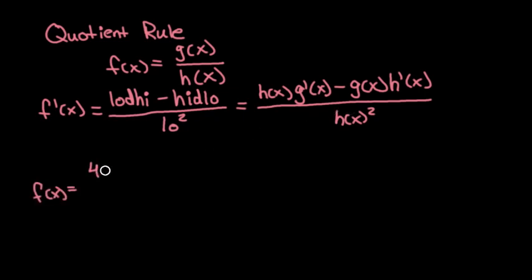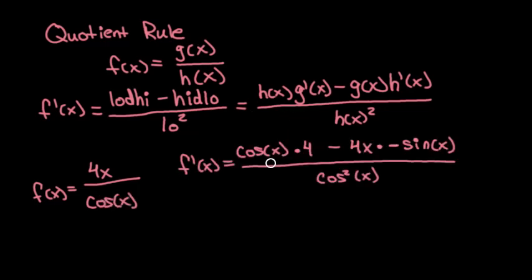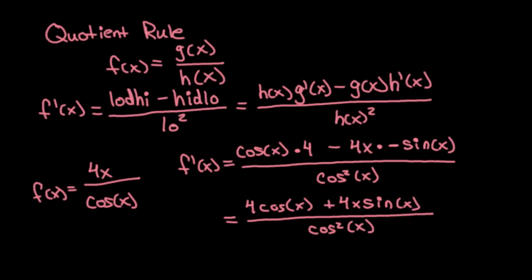If we had f(x) equals 4x over cosine of x, we just applied that little formula and we'll get low d high minus high d low all over low squared. We can simplify it just a little bit. And just like that, we have a nice clean function for the derivative.